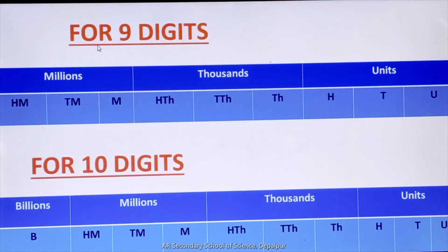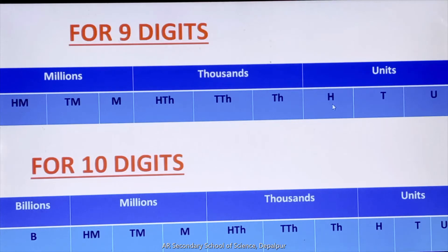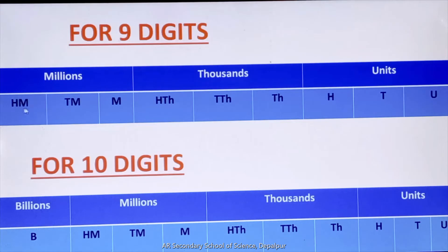Now see the place value chart for nine digits: Units, Tens, Hundred, Thousand, Ten Thousand, Hundred Thousand, Million, Ten Million, and Hundred Million. Units, Tens, Hundred ke periods ko kya kehte hain? Very good — Units period. Thousand, Ten Thousand, Hundred Thousand ke period ko kya kehte hain? Thousands period. Million, Ten Million, and Hundred Million ke period ko kya kehte hain? Millions period.